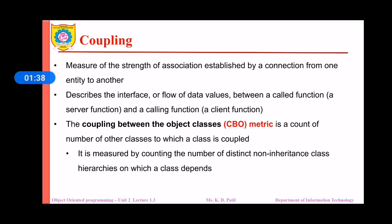The CBO metric is measured by counting the number of distinct non-inheritance class hierarchies on which a class depends. The inheritance concept will be considered here. We will see what inheritance is in the further lectures of object oriented programming.